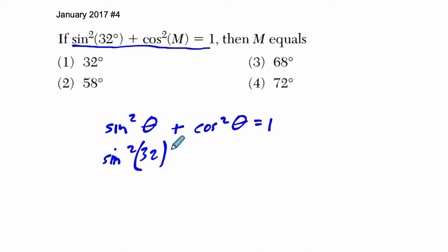They're saying it's 32 degrees. So we could solve for M here using algebra, or we could recognize that the only way this is going to work is if theta is 32 degrees in both cases, and then it equals 1, and that's going to be our answer.